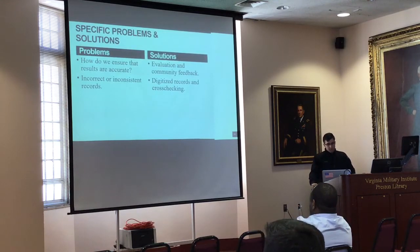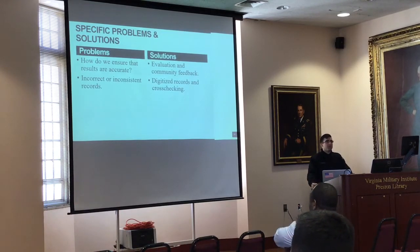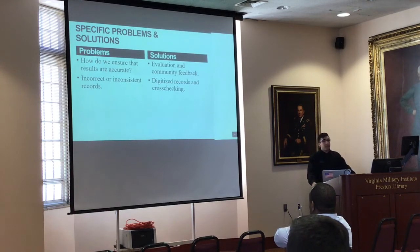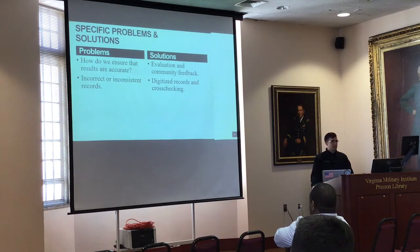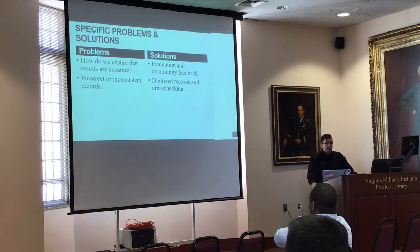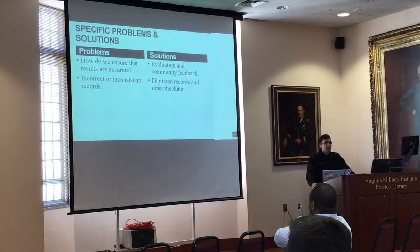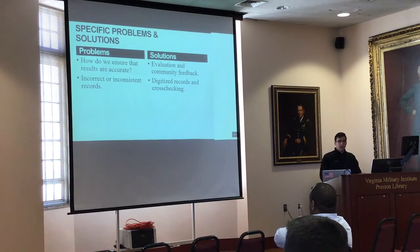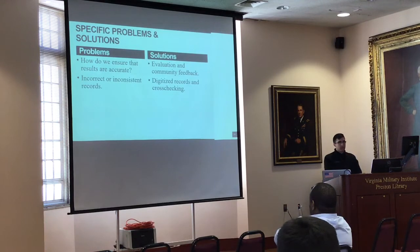More problems: how do we ensure results are accurate and combat incorrect or inconsistent records? Initially I had to go through the yearbooks and manually input everybody's information, and I determined — with input from others — that a lot of the information in the yearbooks was incorrect or inconsistent. Dikes would put nicknames for their rats, or rats would list all of their dikes, making it hard to track. Ways to combat this: going door-to-door with a survey to get community feedback, and also allowing a community feedback function on the website. If you encounter a problem, you submit a report that gets emailed to the admin, who fixes the error, re-uploads, and logs it.